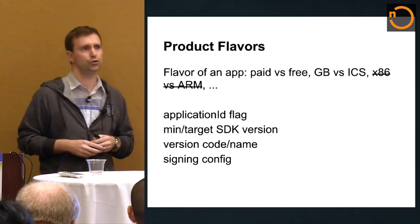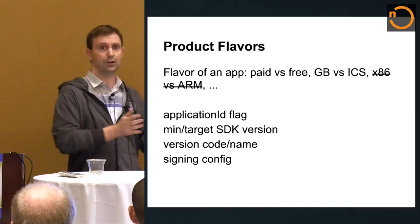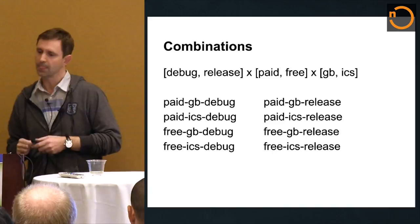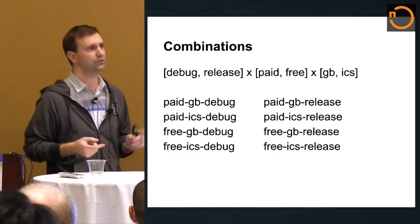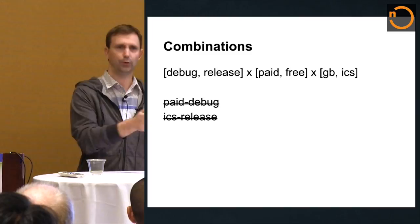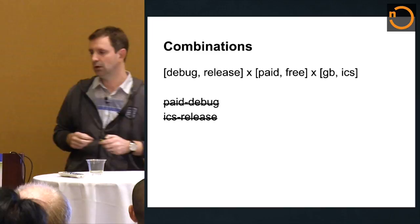You can have multiple dimensions of flavor. If you wanted a game that was paid versus free but also x86 versus ARM, you could create two dimensions. What's important is it's really a combination of all dimensions. Taking an example: the first dimension is your build type (debug/release), the second is paid versus free, and the third is Gingerbread and ICS. You get every single combination of that. Developers sometimes say: I just want a paid debug and I don't care about ICS. It's not possible — you have dimensions, and every dimension must contribute a flavor.